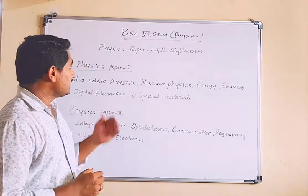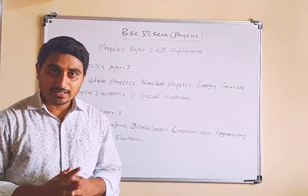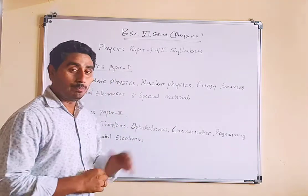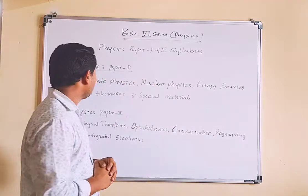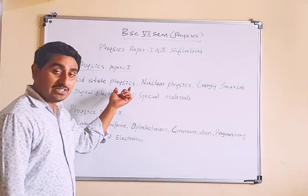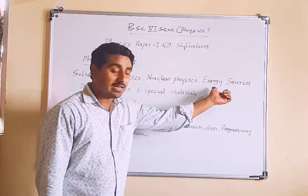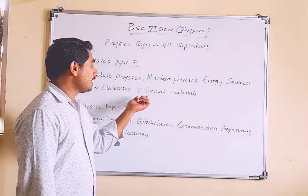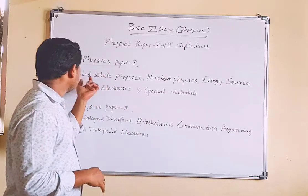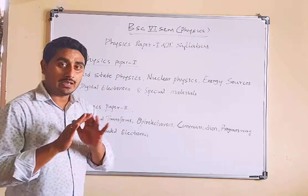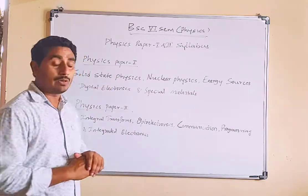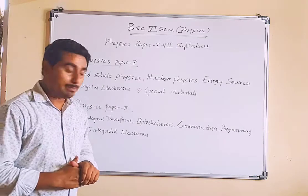Today I would like to start the BSc 6th semester physics syllabus discussion. The physics paper consists of two papers: Paper 1 and Paper 2. Physics Paper 1 is mainly focused on solid state physics, nuclear physics, energy sources, digital electronics, and special materials.